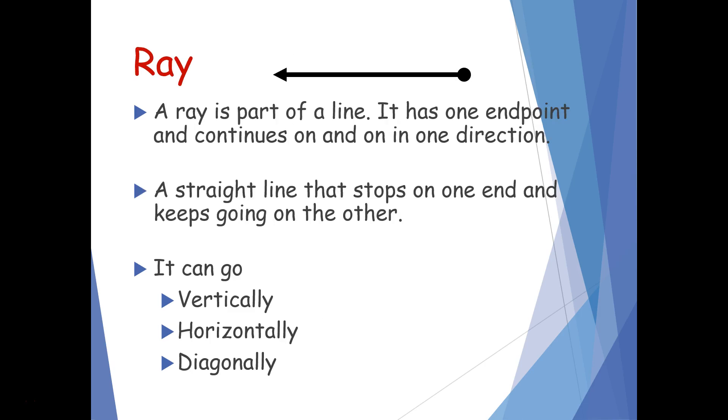Something new we're going to learn about today is a ray. A ray is also a part of a line. It has one endpoint and then continues on and on in one direction. So a ray is kind of like an endpoint and a line put together. It has one definite place where it starts or stops and then it goes in one direction with no end.